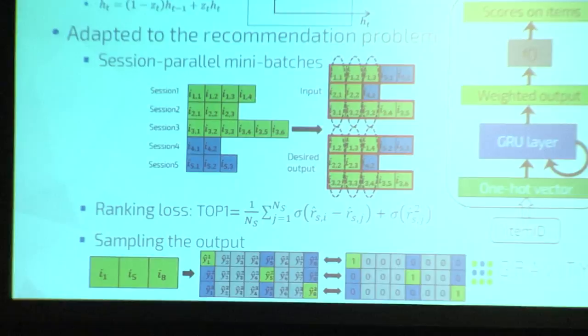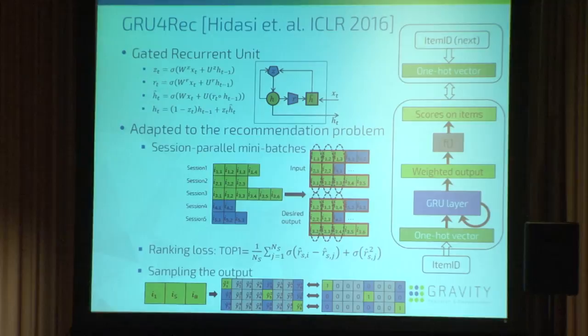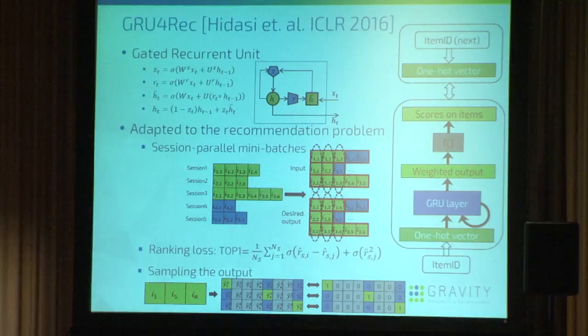I know this slide is kind of intimidating, but that was half the point. This is previous work that we proposed for this session-based recommendation problem with recurrent neural networks. I assume most of you are familiar with RNNs, but I will talk a little bit about them anyway. RNNs are a special type of neural network for processing sequential data. They have a hidden state and they update this hidden state.